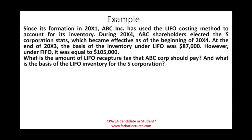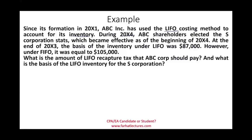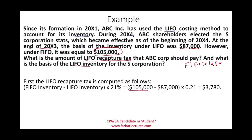Let's look at a more comprehensive example. Since its formation, ABC has used LIFO costing to account for its inventory. Three years later in X4, the ABC shareholders decided to elect S status. At the end of 2003, the LIFO basis of the inventory was $87,000, and the FIFO value is $105,000. Since FIFO is greater than LIFO, we have a recapture tax. The recapture amount is $105,000 minus $87,000, which is an $18,000 difference, multiplied by 21%, giving a tax of $3,780.